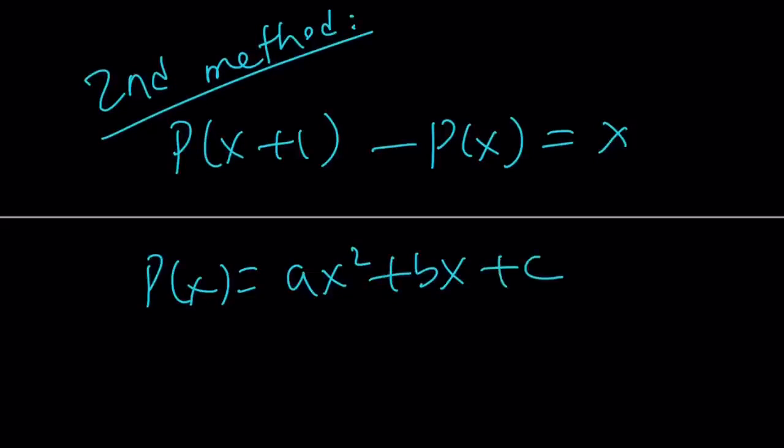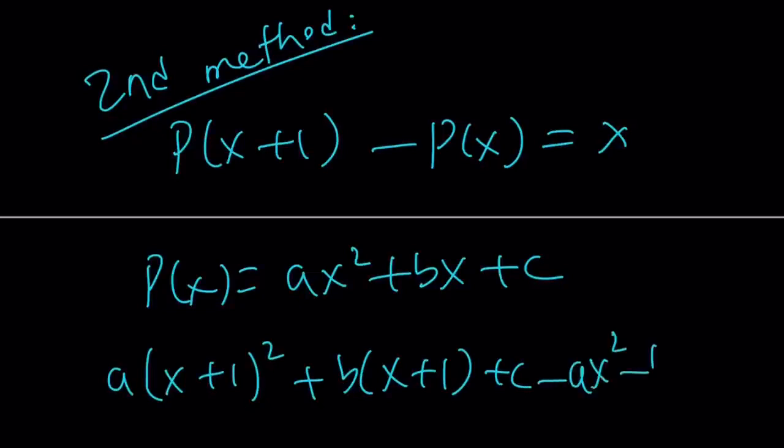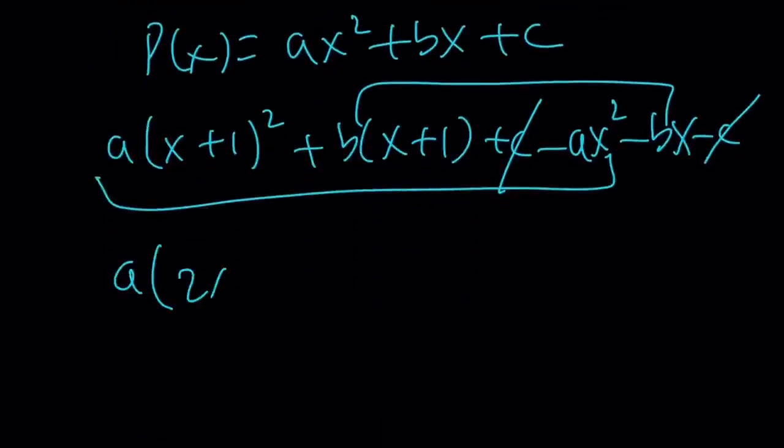Let's just plug it in. P of x plus 1 is going to be a times x plus 1 squared plus b times x plus 1 plus c, and from this subtract P of x, and cancel out the c, and subtract these and subtract those. You end up with a times 2x plus 1 because x squared cancels out.